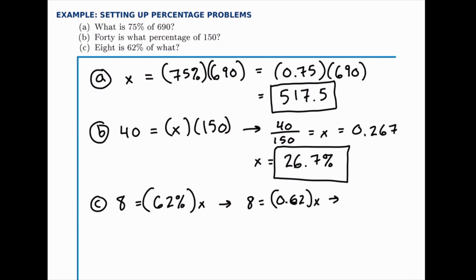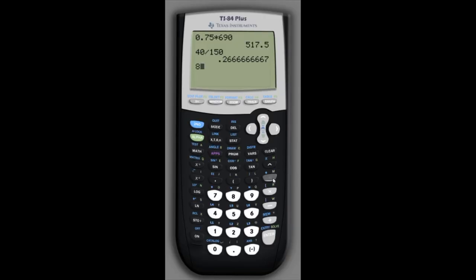And then, divide both sides by 0.62. So, we need to divide 8 by 0.62. 8 divided by 0.62 gives us about 12.9.